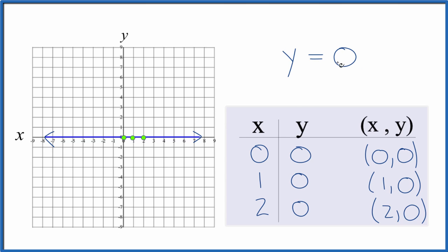And that's the graph for y equals 0. In fact, y equals any number. If it's just y equals a number, that'll give you a horizontal line.